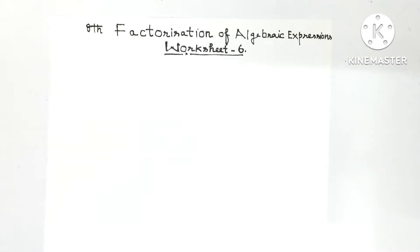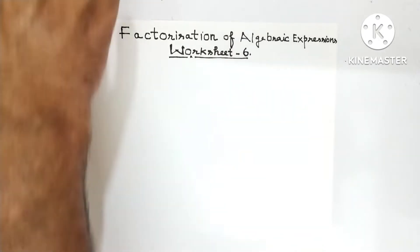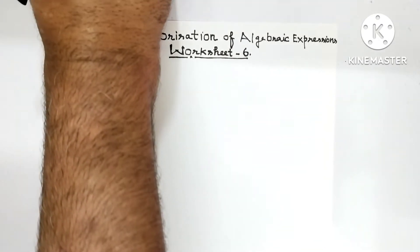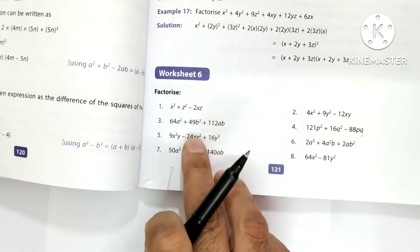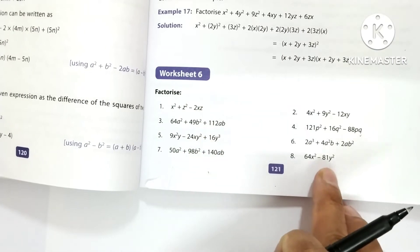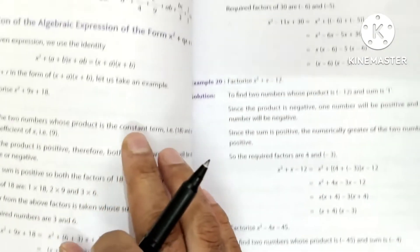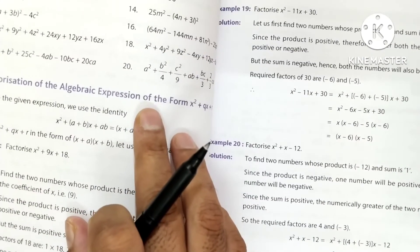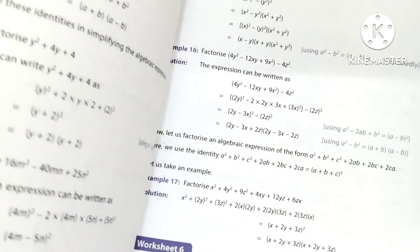You have already done these identities and questions based upon these. In this worksheet there are total 20 questions. So we will be doing these questions. Let's start.